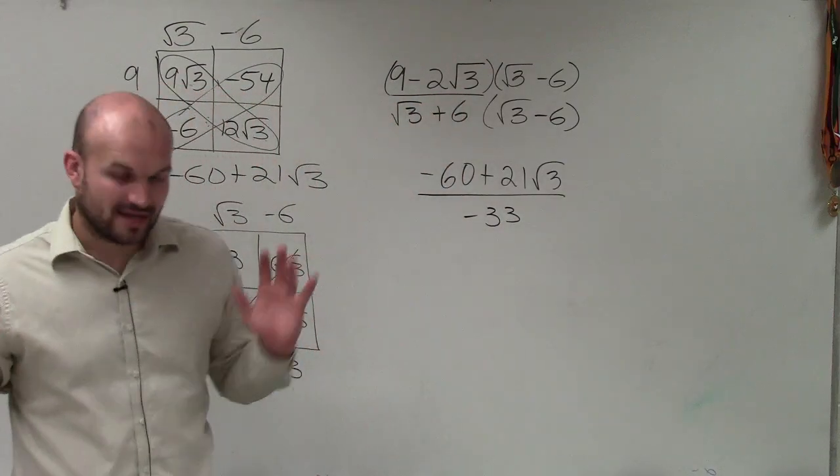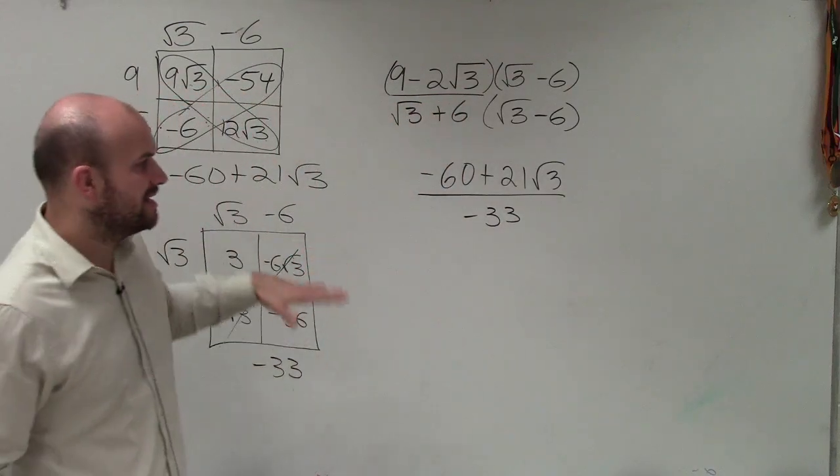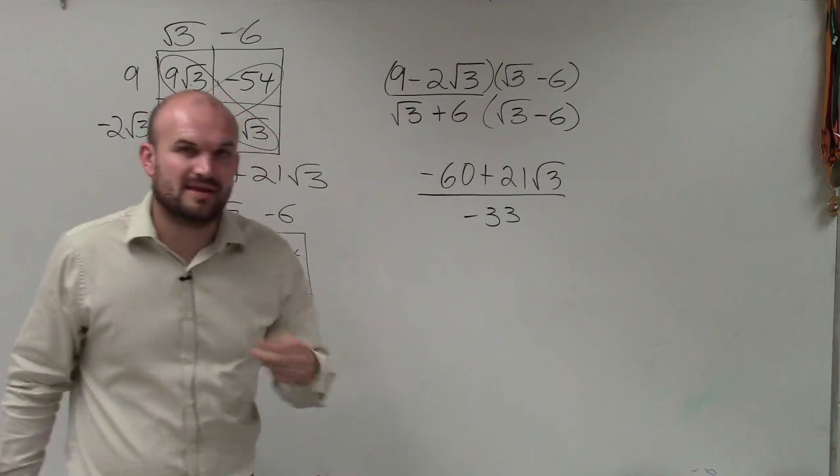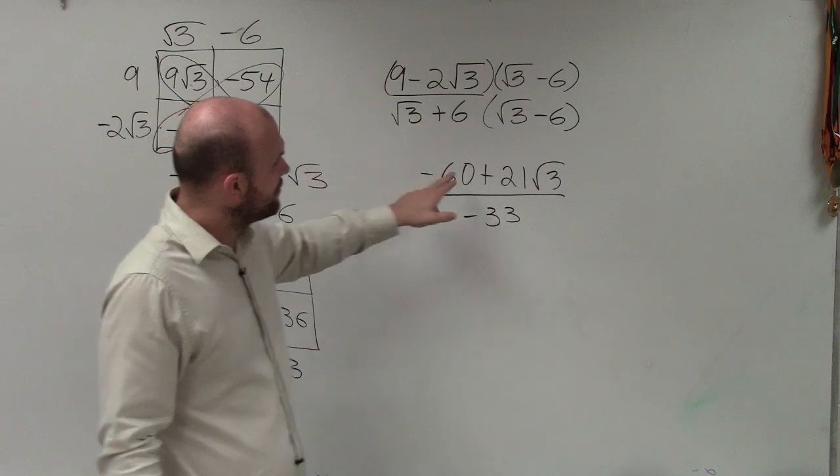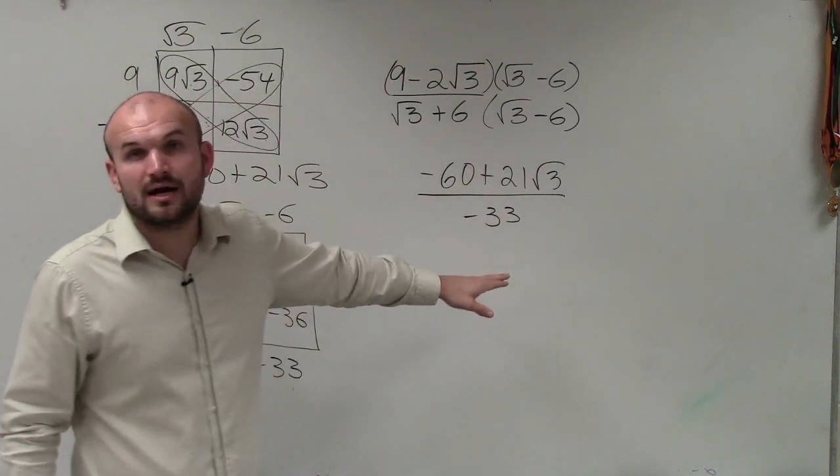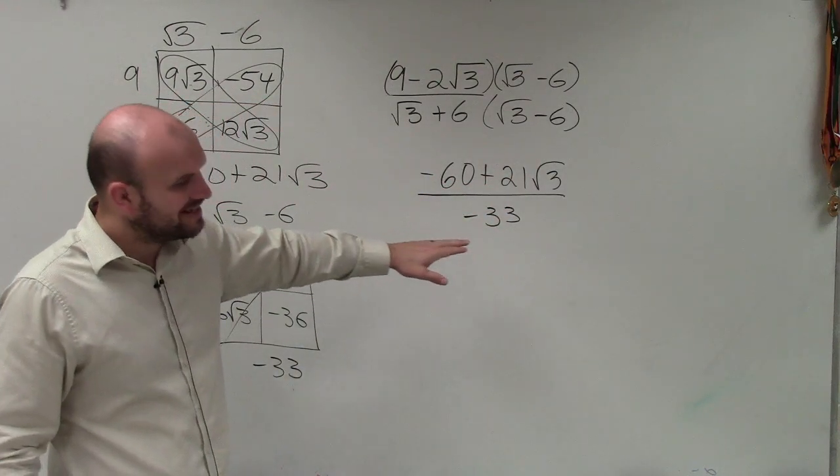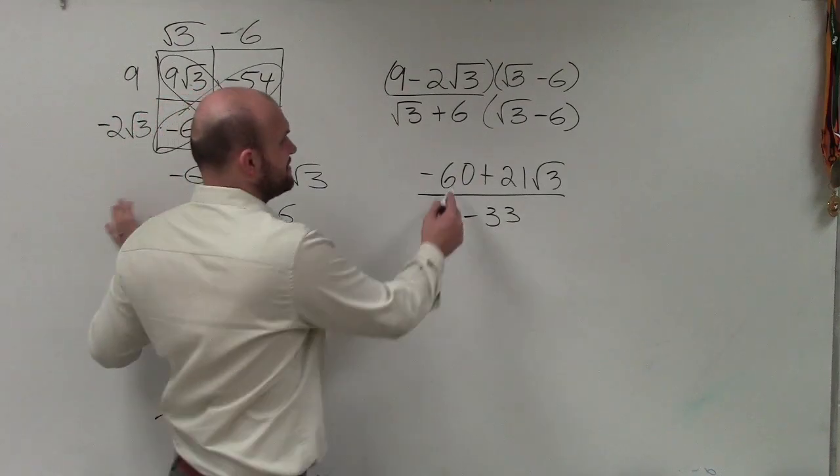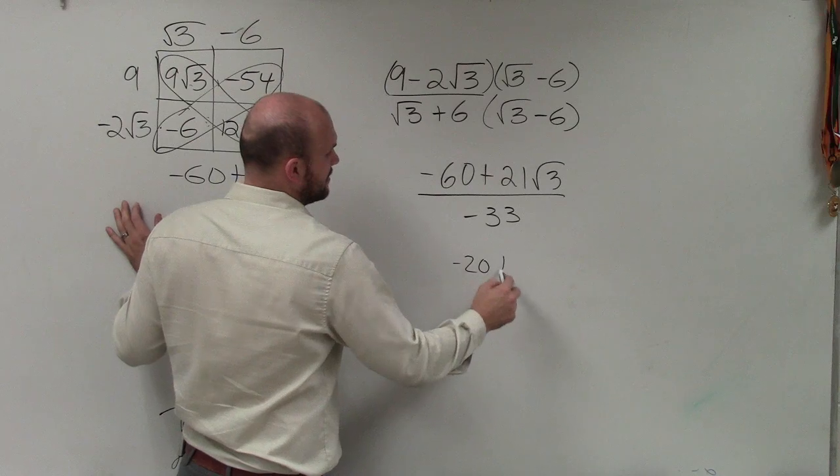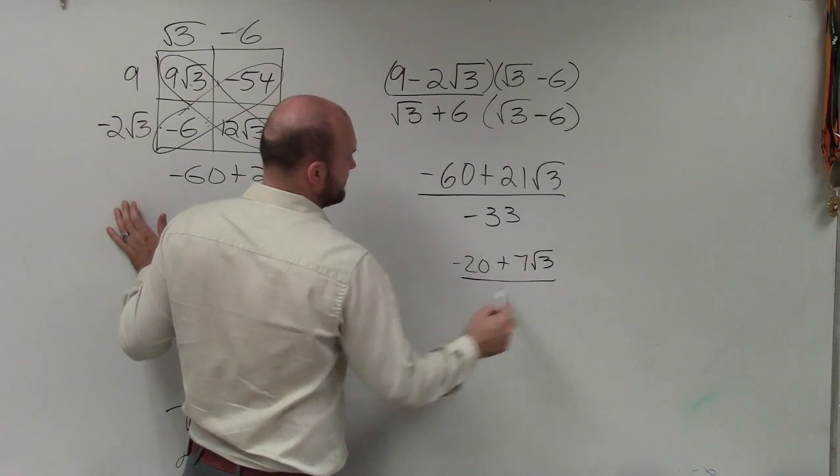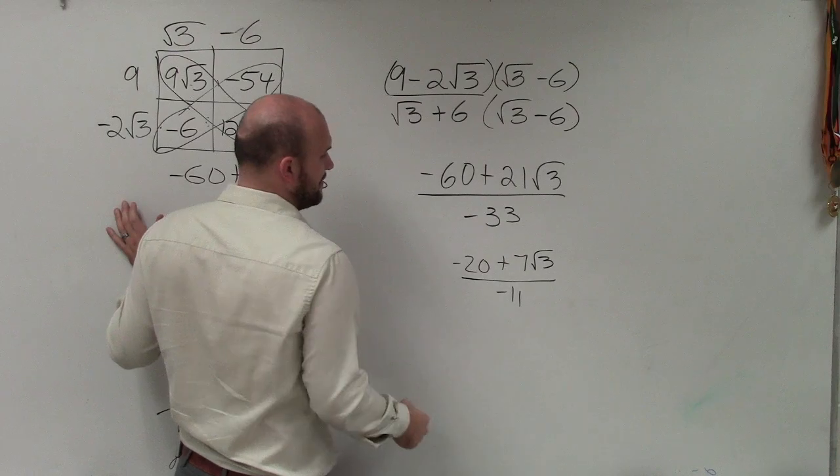Before I say I'm done, make sure we see, can we simplify anything? Is there any number that can be divided out of all these? We notice that 3 is a common divisor of all those numbers. So if I divide every term by 3, I'd have negative 20 plus 7 square root of 3 divided by negative 11.